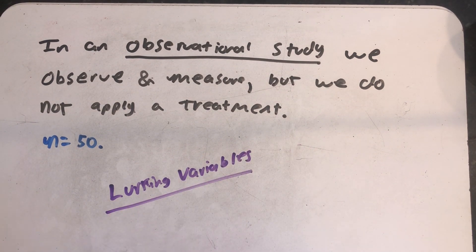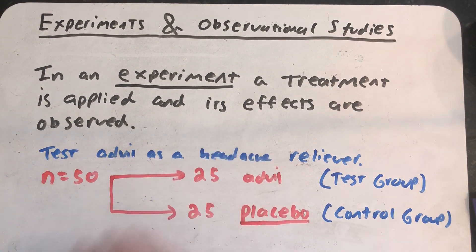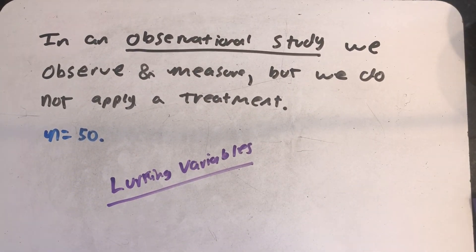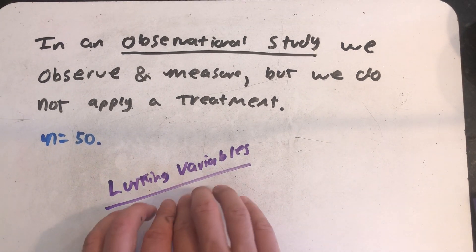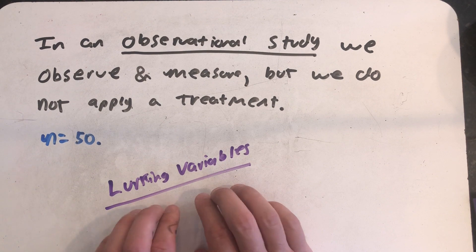Variables that we're not planning for that come up and influence our study are called lurking variables. In an experiment, we can try to control those. Headaches are often caused by dehydration. So we can make sure in the experiment that our subjects drink plenty of water and drink the same amount of water in the experimental group, the test group, and in the control group. Whereas in the observational study, I have no control over that at all. And so how much water people drink might become a lurking variable.